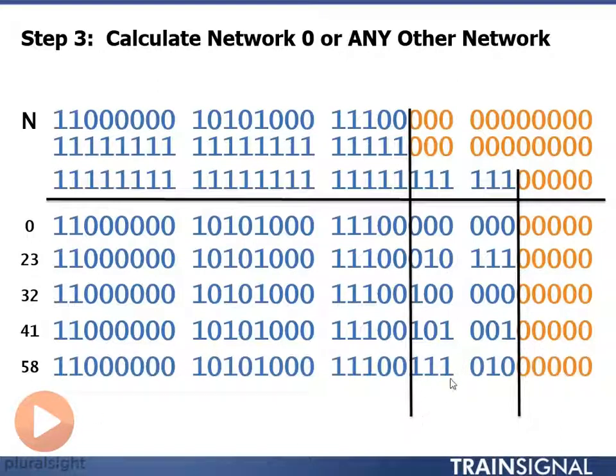58, 111010 is my borrowed bits network portion, all 0s in the host portion is my network address.